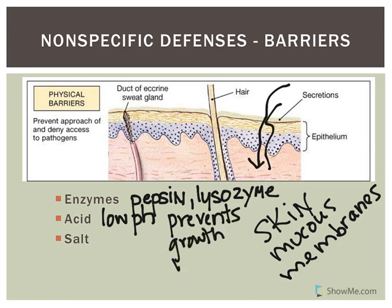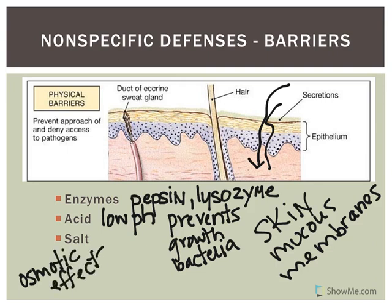Gastric acid prevents growth of bacteria and helps destroy bacteria. With sweat, your skin, and also your tears, it's salty. A high concentration of salt has osmotic effects which kills off some bacteria. If you have a lot of salt outside a bacterial cell, water leaves that bacterial cell and can cause it to die as a result of osmosis.